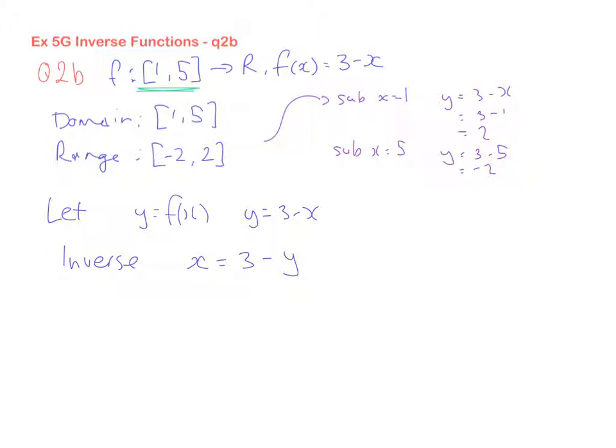So I end up going x equals 3 minus y. Now I simply fix these up. It's a positive 3, so I'm going to take 3 from both sides. I end up with x minus 3 equals minus y. That's like a minus 1 there. So divide by minus 1 on both sides. I get minus x plus 3 equals y, or I can write that as y equals 3 minus x, which is just a bit neater.